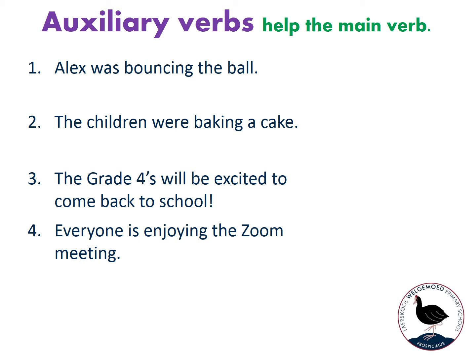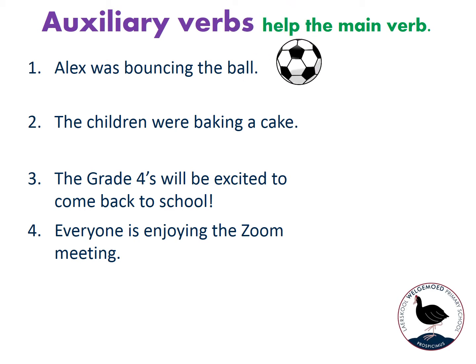Let's look at the first example. We have Alex who is bouncing the ball. You start off by looking for the main verb — the main verb is 'bouncing'. Then we see which word is helping the main verb. We're not saying 'Alex bouncing the ball', we are saying 'Alex was bouncing the ball'. So the little word helping 'bouncing' is 'was', which means the auxiliary verb in the sentence is 'was'.